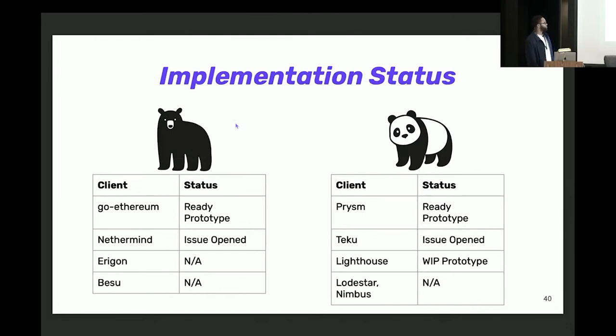So what implementations do we have? Like I mentioned, we have a ready prototype for Geth and Prysm. For Nethermind, they have interest in implementing EIP-4844. They have an issue open in the repo. Teku, they also have a lot of interest in it. For Lighthouse, they've already begun work on a prototype. Still a work in progress, though. I think it was at ETH Berlin, some folks in Lighthouse, including a Geth core dev, started working on a prototype, and they're getting there.